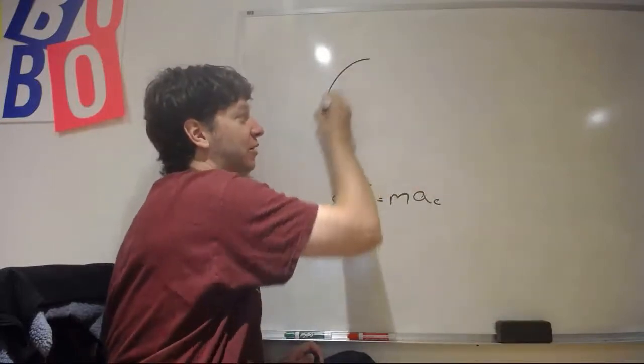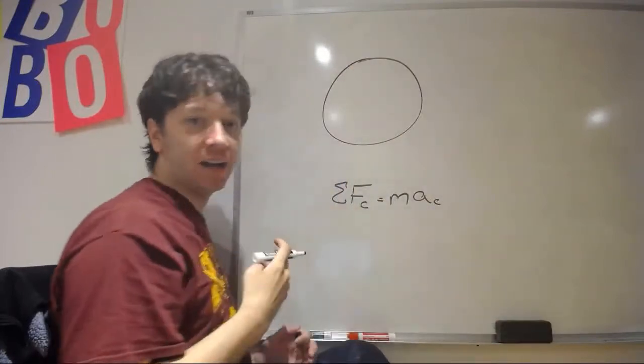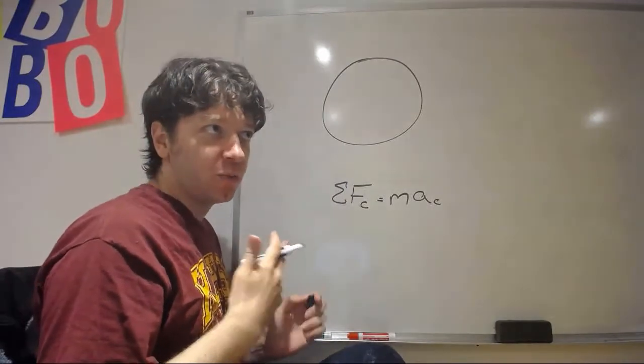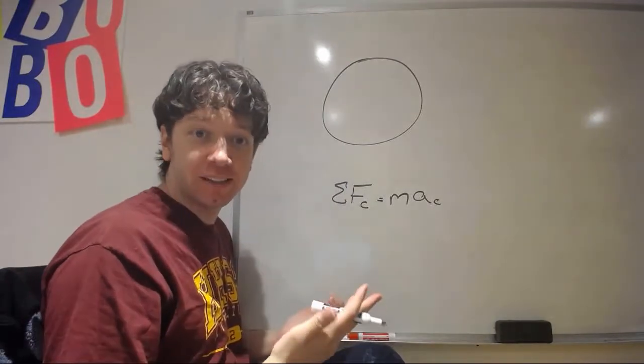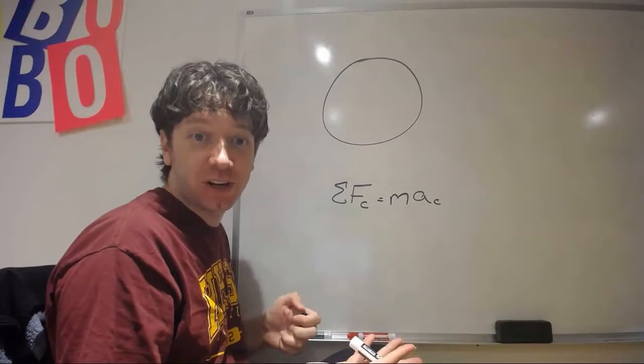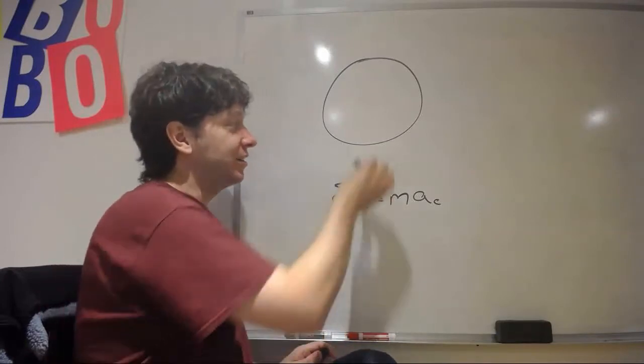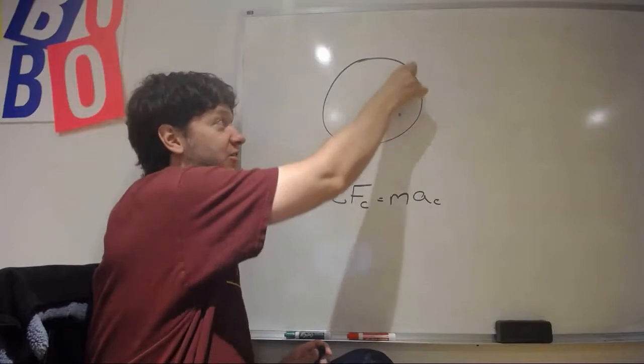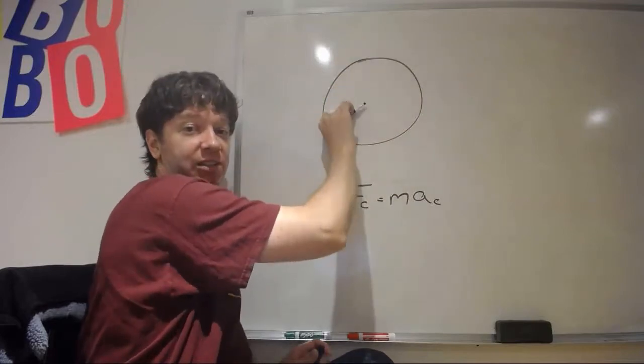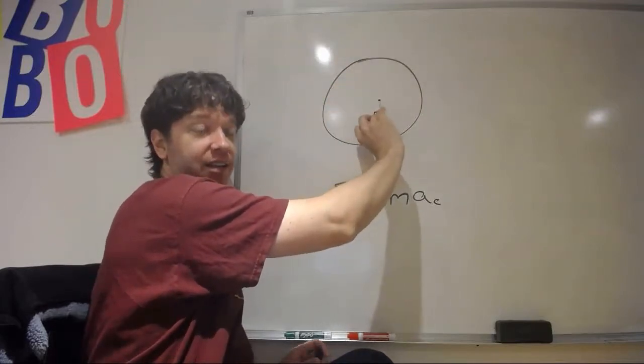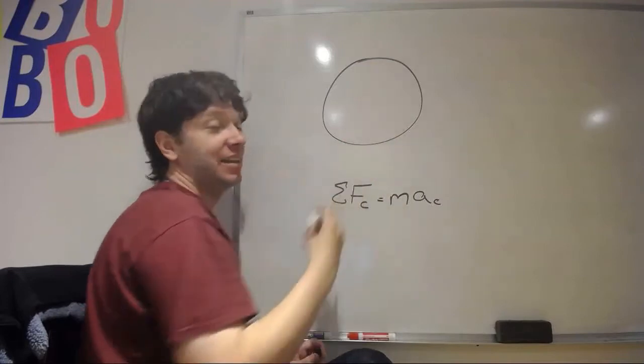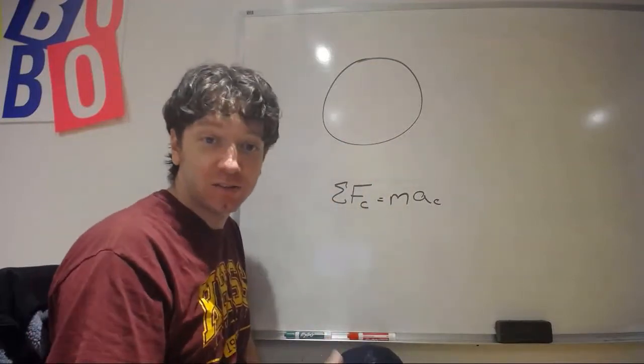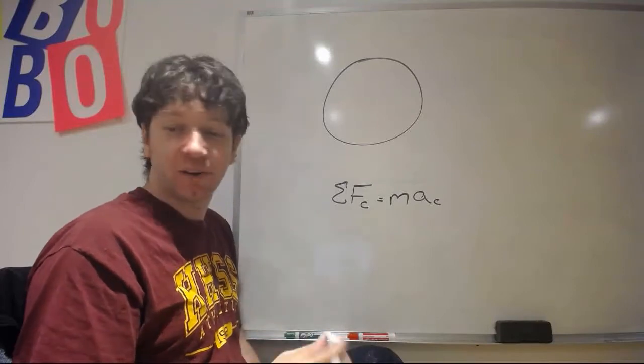So if we have something undergoing circular motion, I'd always tell you, when you're creating your coordinate system, always choose your positive direction to lead to direction of acceleration. Now in this case, we're moving in a circle. The acceleration is always center-seeking. So what we're going to do is make the direction towards the center of the circle positive.